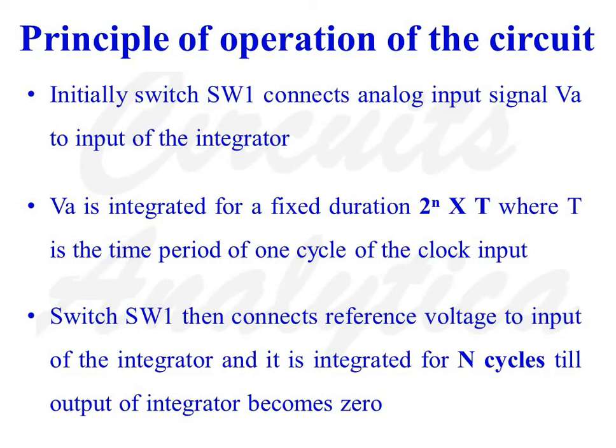Switch SW1's position is then changed to connect reference voltage minus VR to the input of the integrator, and it is integrated for n cycles until the output of the integrator becomes zero. The count of the end stage counter during phase 2, when the reference voltage is connected to the buffer amplifier, is the digital equivalent of the analog signal applied.